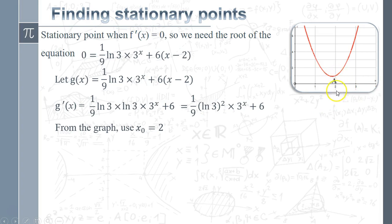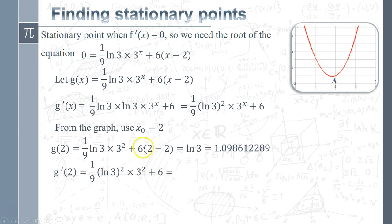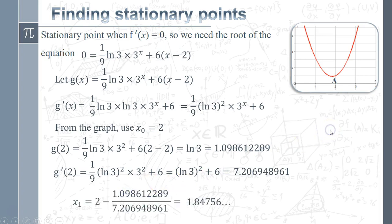We need a starting point, so let's use x₀ = 2 because that seems fairly close from our graph to the turning point we're looking for. g(2) becomes ln(3), which is 1.098. g'(2) becomes ln^2(3) plus 6, which is 7.207. Plug it all into Newton-Raphson, and you get x₁ = 1.84756.